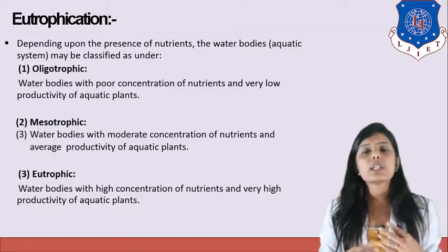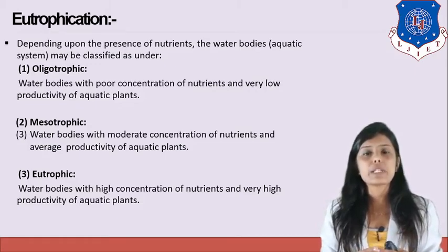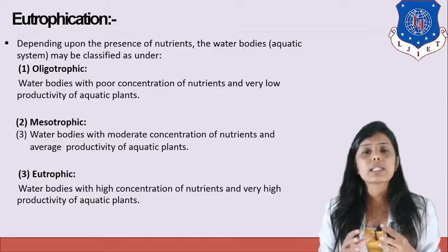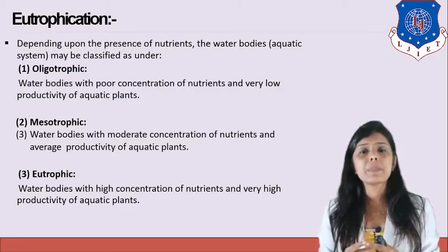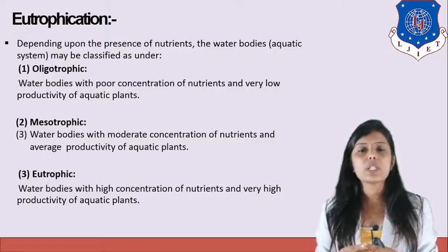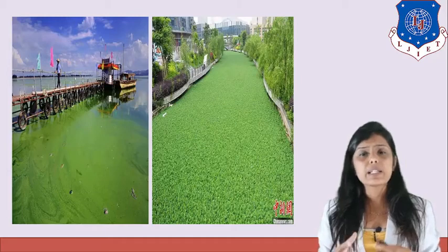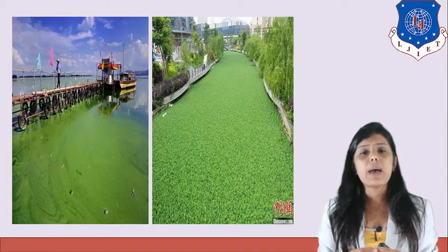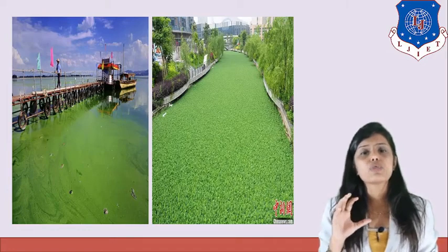As pollutants are added to the water, the stage moves from oligotrophic to mesotrophic, and then from mesotrophic to eutrophic. Oligotrophic means less pollutants, less nutrients, and less plant productivity. Mesotrophic means medium pollutants, medium nutrients, and medium plant productivity. Eutrophic means high pollutants, high nutrients, and high plant productivity — resulting in excessive algae growth. As you can see in the figure, the whole lake is covered by algae in the eutrophic stage.